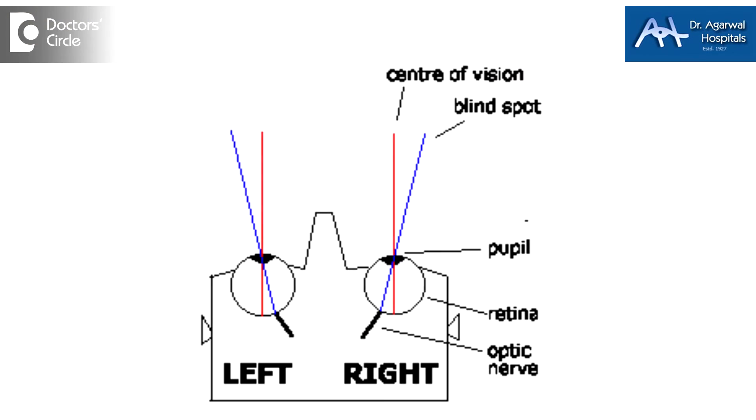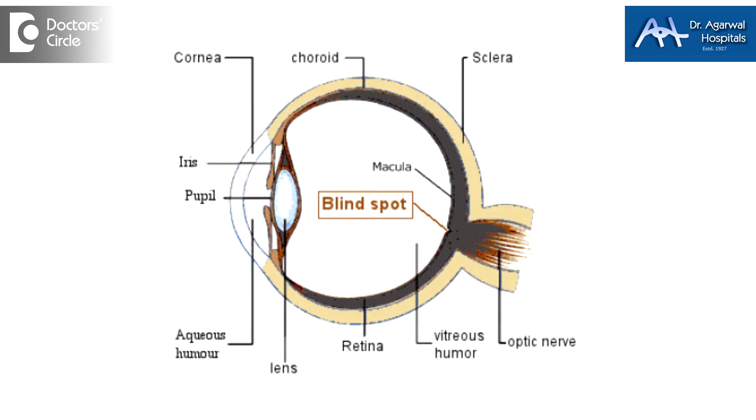Whenever we are looking forward, when both the eyes are open, we should have 180 degrees of vision. But if in one area we are not able to see, we call this a blind spot.